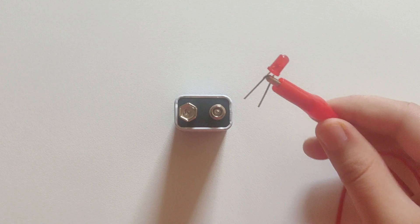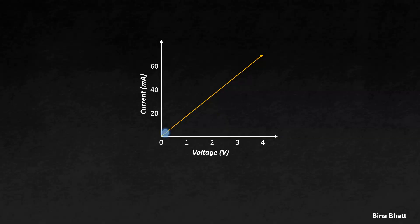First, let's look at the VI relationship of a resistor. Notice how the current ramps up linearly with voltage. It's a perfect example of Ohm's law in action.